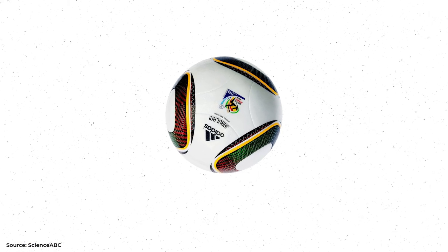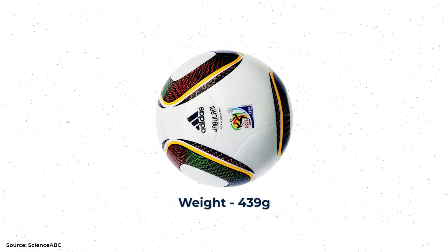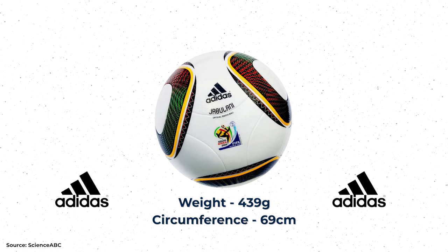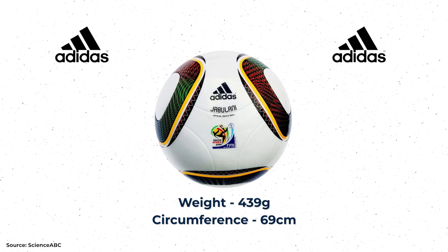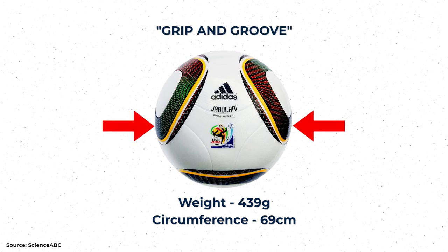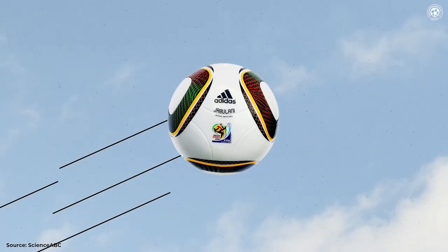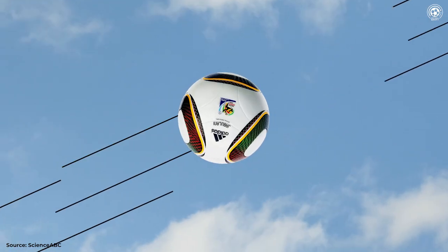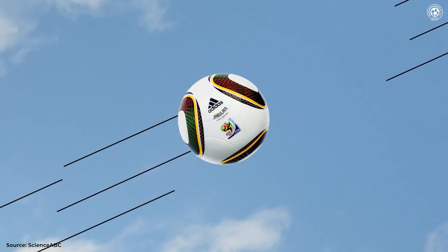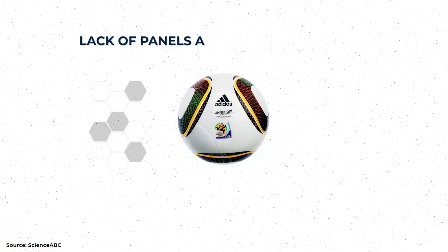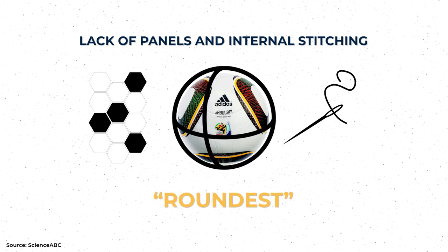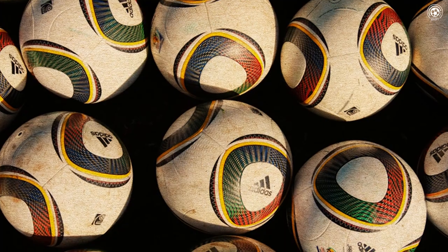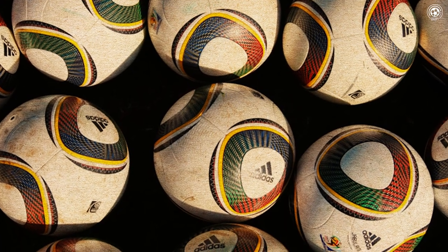Jabulani has a weight of 439 grams and a circumference of 69 centimeters. Adidas, the creator of Jabulani, staunchly defended their ball, touting it as revolutionary thanks to new grip and groove technologies that advanced football. The concept was that the ball's surface would enhance control and grip, while its aerodynamic properties would ensure exceptional stability in flight. Jabulani's distinctiveness lay in its lack of panels and internal stitching, making it the roundest ball ever used in FIFA World Cups. According to Adidas, Jabulani was the most accurate and stable ball they had ever produced up to that point.